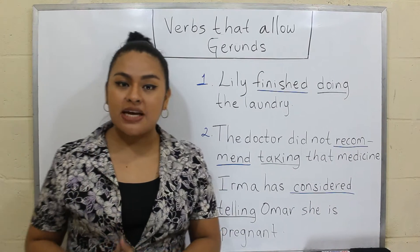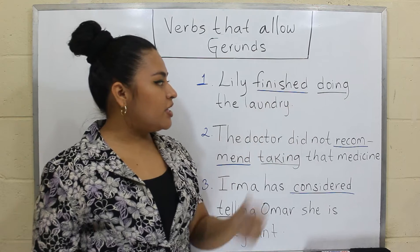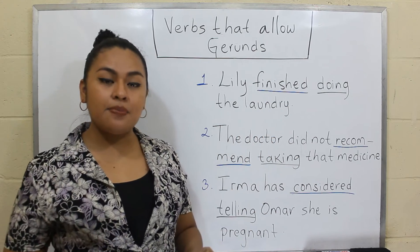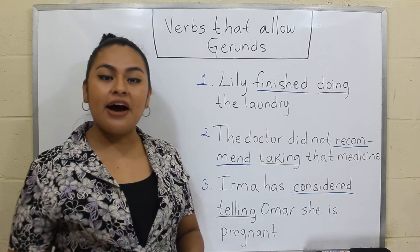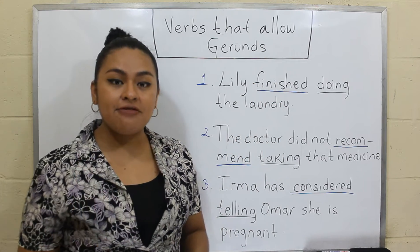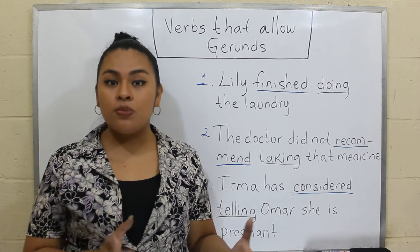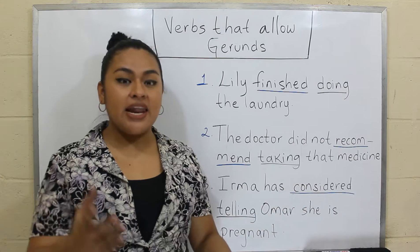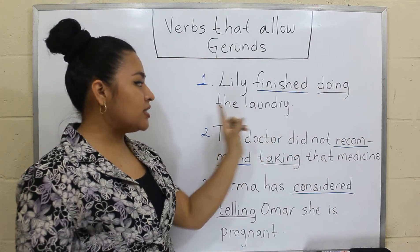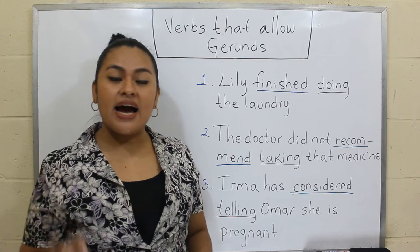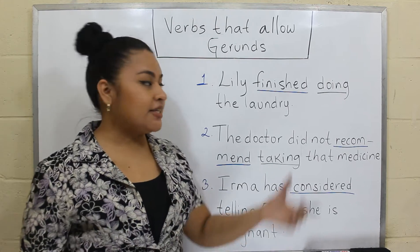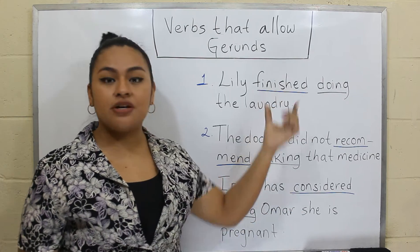The first example says: 'Lily finished doing the laundry.' In this example, we have the main verb 'finished,' so then we must have a gerund or a gerund phrase. And actually we have a gerund phrase: 'doing the laundry.' We cannot have an infinitive or an infinitive phrase after the verb 'finished.'